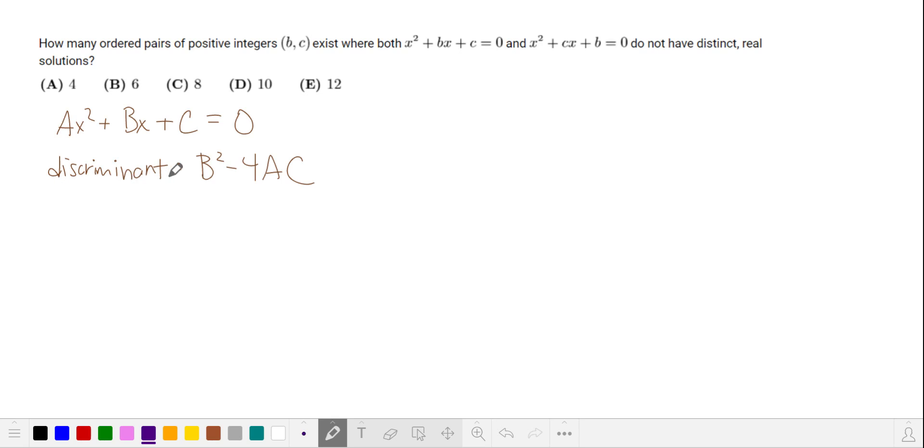This suggests a role for the discriminant, which is b squared minus 4ac. If the discriminant is equal to zero, then it has one real solution. If the discriminant is less than zero, then there are no real solutions. So we combine these and find that the discriminant is less than or equal to zero for both of these quadratics.